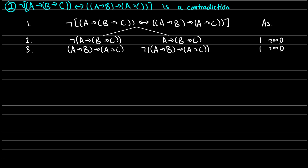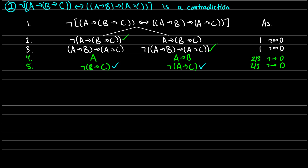Let's do not-arrow decomposition first. In the case of line two, A will be true and not (B → C) will be true. We do the same on the right side with not ((A → B) → (A → C)): we get that A → B is true and not (A → C) is true. Then from not (B → C) and not (A → C), we apply not-arrow decomposition again: on the left we get B and not-C, and on the right we get A and not-C. Both of these come from line five.